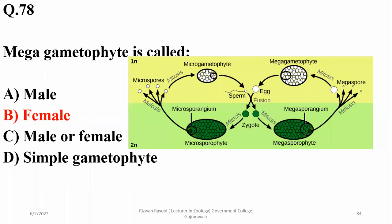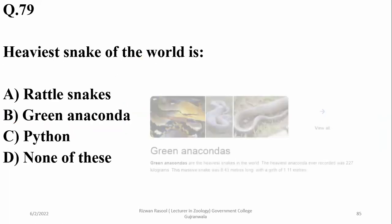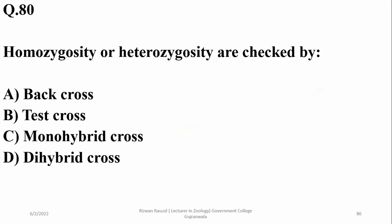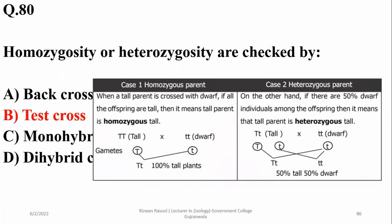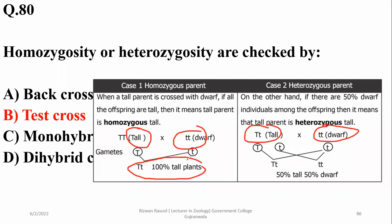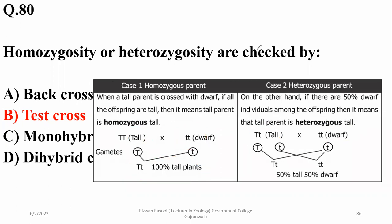Number 79. The heaviest snake in the world is the green anaconda. Number 80. Homozygosity or heterozygosity in plants or organisms is checked by a test cross — when we cross a phenotypically dominant individual with its recessive form. If all plants in the F1 generation are dominant type, that plant is referred to as homozygous; otherwise heterozygous.